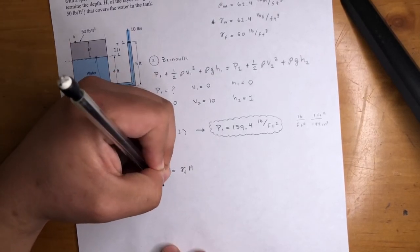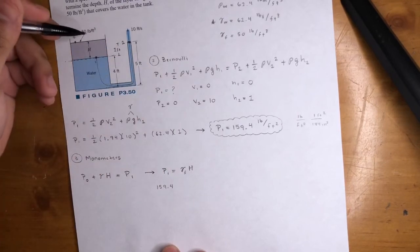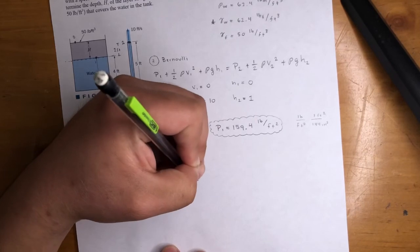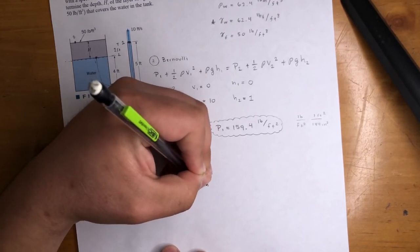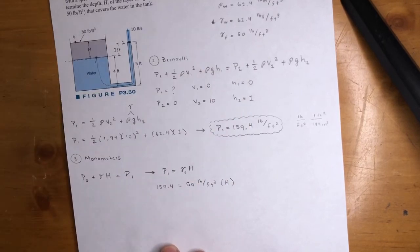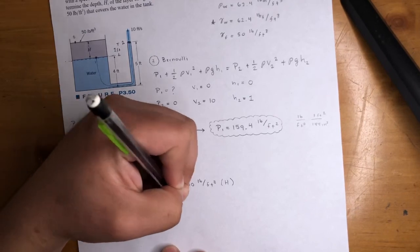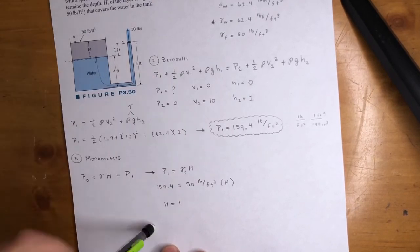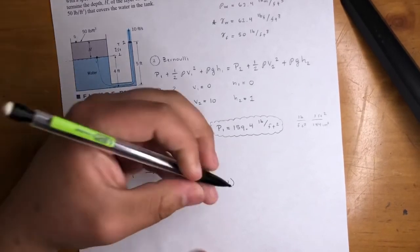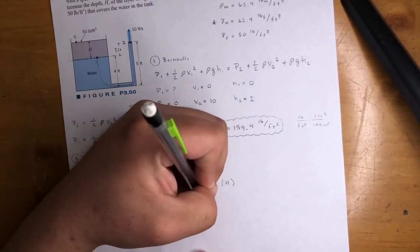Pressure one is 159.4 pound per feet squared, and then this is 50 pound per feet cubed, multiplied by a height. If you do the math, you should get height is equal to 3.188, 3.188 feet. Cool. So that's your answer right there.